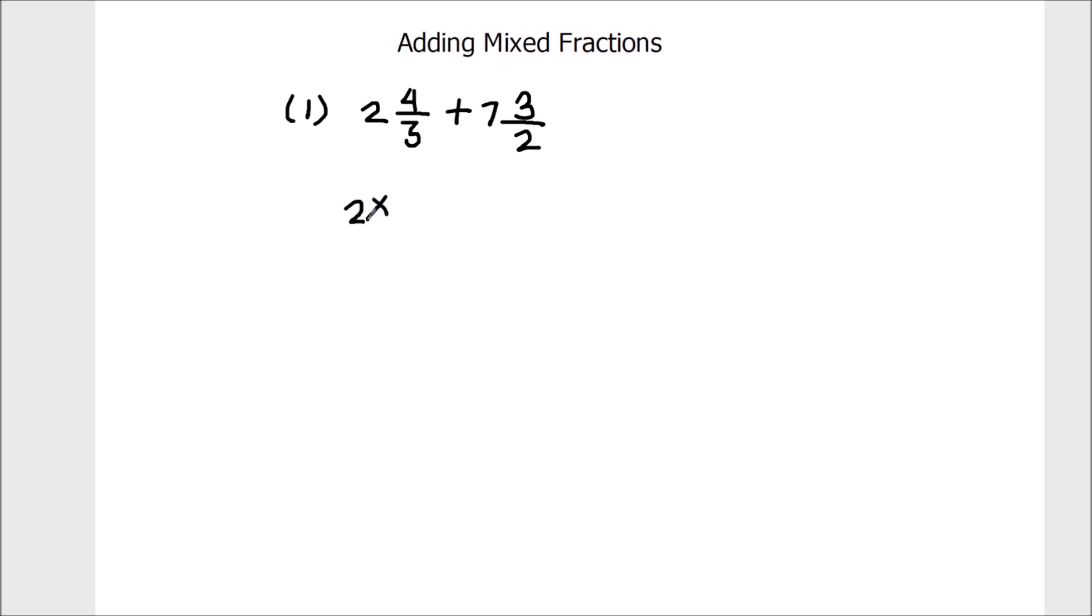So the first one will be 2 times 3 plus 4 divided by 3, and the second fraction will be 7 times 2 plus 3 divided by 2.